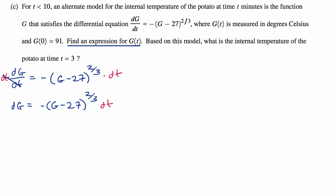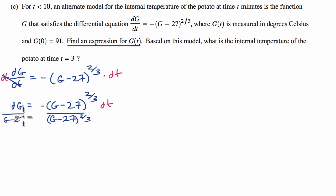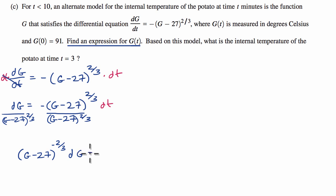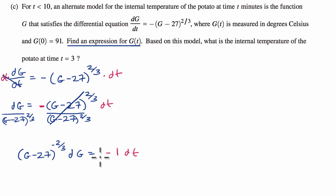Since there are no t's on the right side, I just need to get the g's over to the left. Dividing both sides by g minus 27 to the 2/3rds, the left side becomes g minus 27 to the negative 2/3rds dg, and I'm left with negative dt on the right — which I can write as negative 1 dt. Now we just integrate both sides.